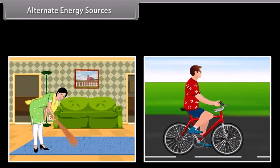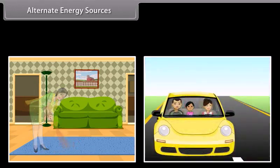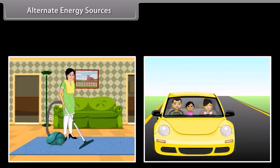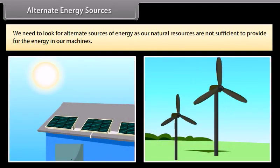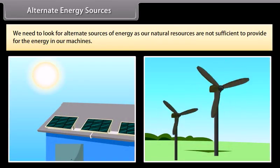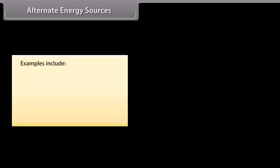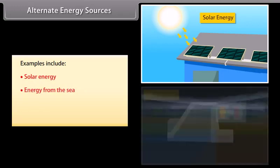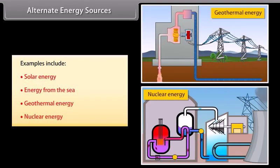Alternate energy sources. As we progressed, our day-to-day life activities also changed. We now get most of our work done by machines. Due to this, we need to look for alternate sources of energy, as our natural resources are not sufficient to provide for the energy in our machines. Examples include solar energy, energy from the sea, geothermal energy, and nuclear energy.